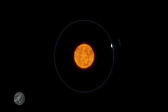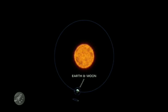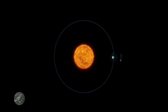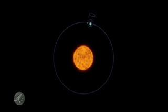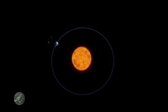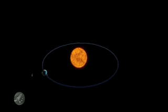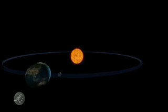In space, Webb will loop around a point called L2. Here, Earth's gravity pulls the telescope along so it can keep up with Earth in its path around the sun. Only from L2 are the sun and Earth always on the same side of Webb's sun shield.